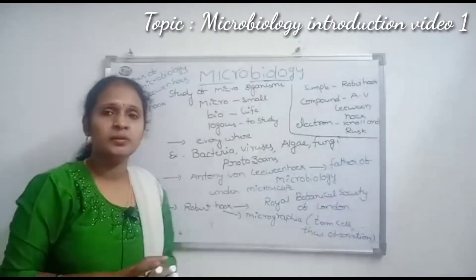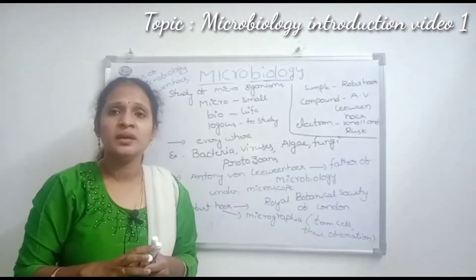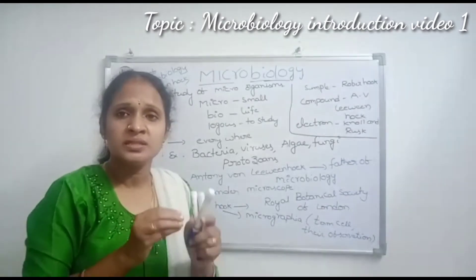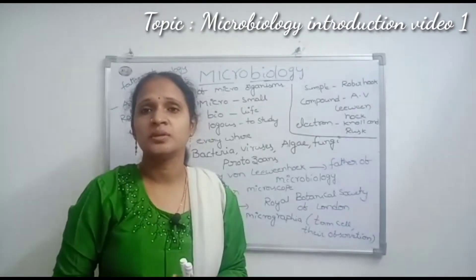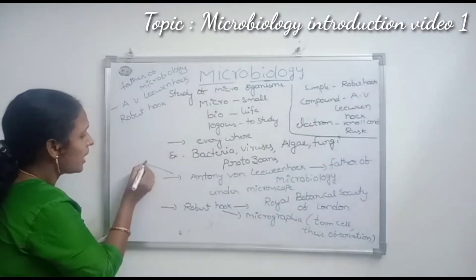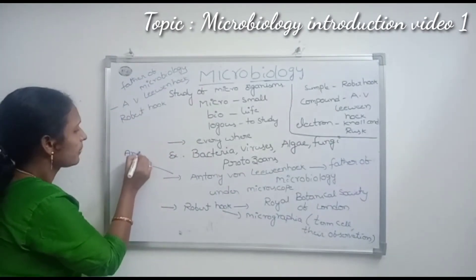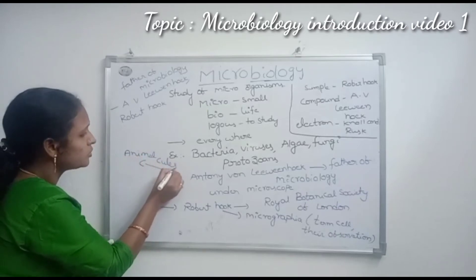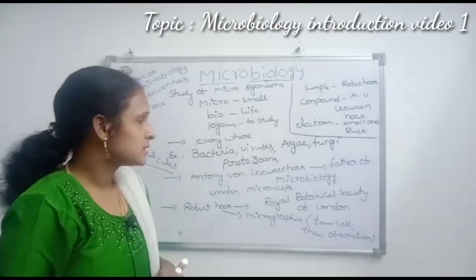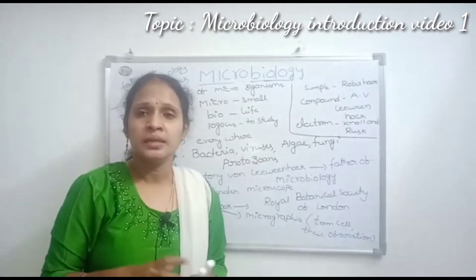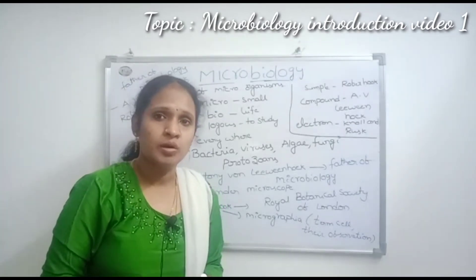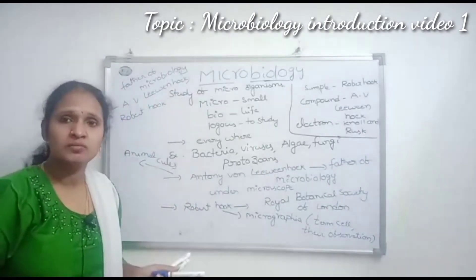Antony van Leeuwenhoek first studied microorganisms under the microscope using his own design. He observed small organisms in teeth scrapings, soil particles, and water droplets. These microorganisms were first named 'animalcules,' and were later given different names by different scientists.